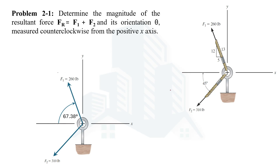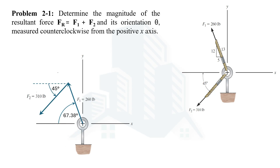Since we are asked to determine the resultant force, we use the head-to-tail rule. We keep the first force in place and place the tail of the second force at the head of the first force. According to the head-to-tail rule, the resultant goes from the start point to the end point — that is the resultant force acting on this hook.